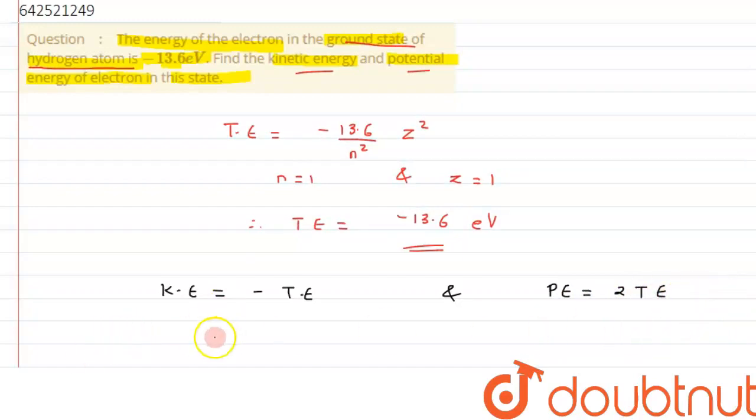If we substitute the value of total energy over here, this will become 13.6 electron volts, and potential energy will become minus 27.2 electron volts.